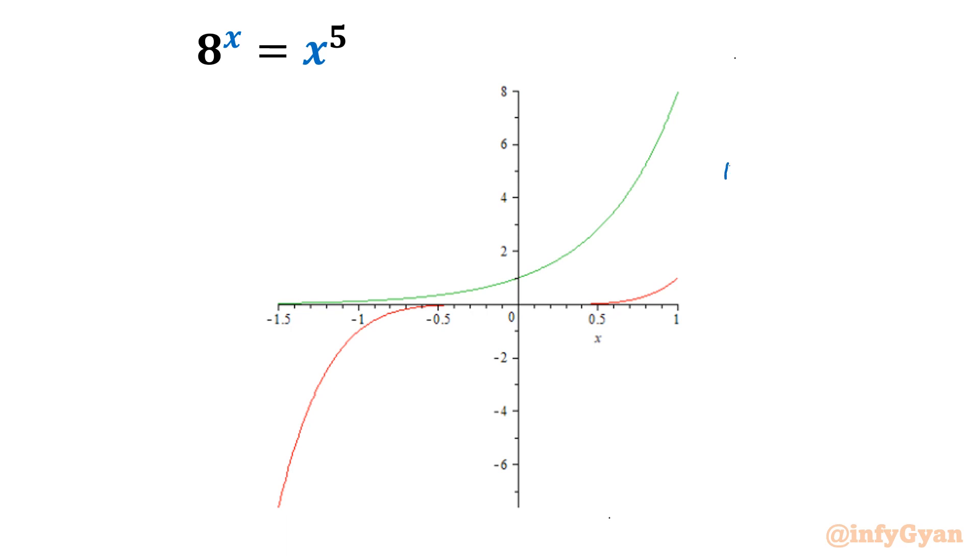This is your 8 power x. And second graph is x power 5. Will tend to x power 5 will tend to minus infinity. Function towards minus infinity. If extending to plus infinity, function going towards plus infinity. This is how you can find out solution using Lambert W function or omega function.